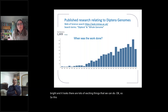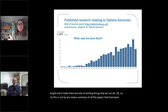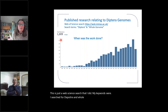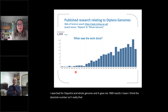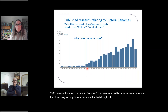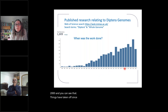This is not by any means a summary of all the papers that have been published. This is just a Web of Science search. My keywords were Diptera and whole genome and it gave me 1,800 results. I think the absolute number isn't really that important. My timeline here is deliberate — I've started in 1990 because that was when the Human Genome Project was launched. The first draft of the human genome came out in 2000, and you can see that things have taken off since then and more and more papers are coming out.